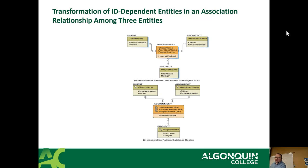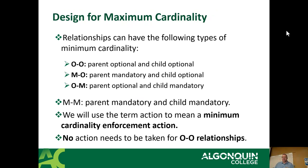Designing for minimum cardinality: parent optional, child optional — you don't need to do any extra rules, everything allows nulls. That's the locker situation where a student can exist without a locker and a locker can exist without a student — the foreign key is optional. For optional-to-optional we do nothing.